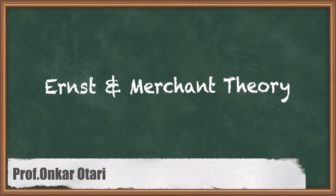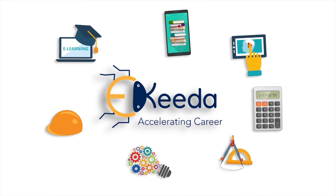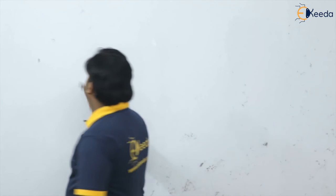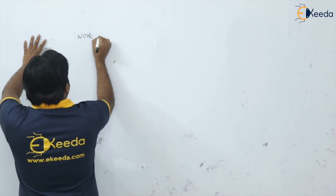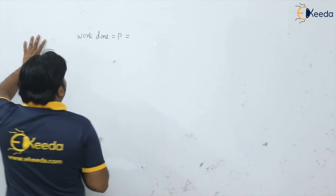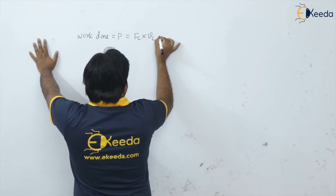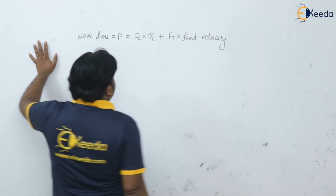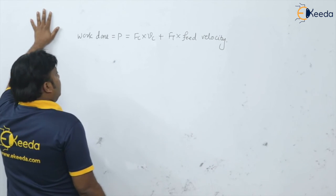After seeing the formula for the shear strength of the material, now we can find out the work done. Work done in the metal cutting operation, or rather the cutting power in the machining or metal cutting operation — how to find the work done or power. The power P is equal to cutting force into cutting velocity plus feed force into feed velocity. This is actually the formula for work done or power in metal cutting.